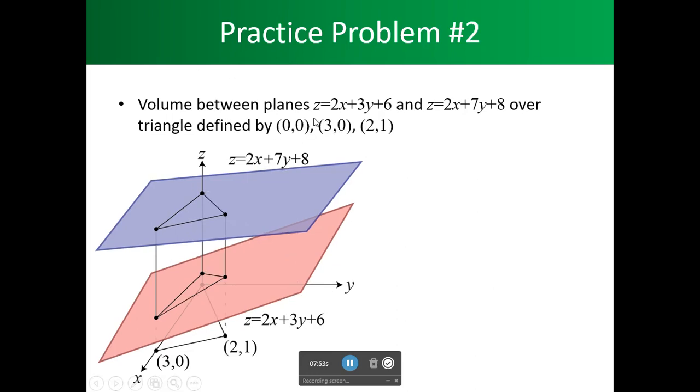Find the volume between the planes z equals 2x plus 3y plus 6 and z equals 2x plus 7y plus 8 over the triangle. Not over the unit square this time, over the triangle defined by the points 0,0, 3,0, and 2,1. So, have fun.